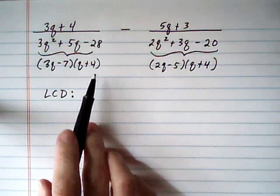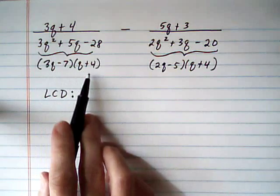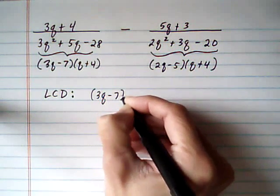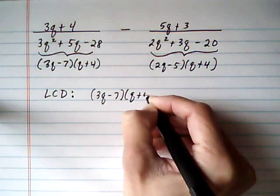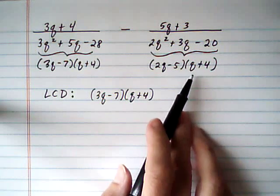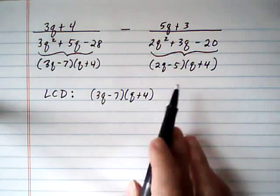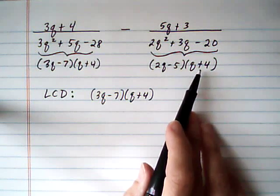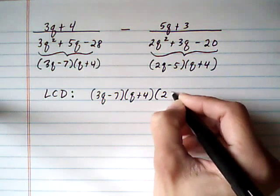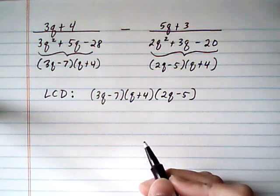All right, now that we have it factored, we can figure out the pieces for the LCD. So what I usually do is take the entire first denominator, take both factors, 3q minus 7 and q plus 4, and then I look at the next denominator and I take any piece or factor that's missing. So right now, it looks like I've already got the q plus 4, so I don't need to take it again. I do not have the 2q minus 5 yet, so that gets factored in here. 2q minus 5, and that would be our entire LCD.